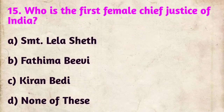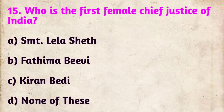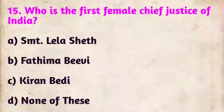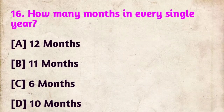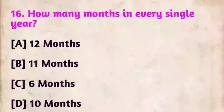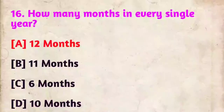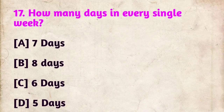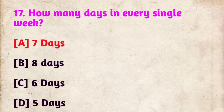Question 15: Who is the first female Chief Justice of India? The correct answer is Fatima Bibi. Question 16: How many months in every single year? The correct answer is 12 months. Question 17: How many days in every single week? The correct answer is 7 days.